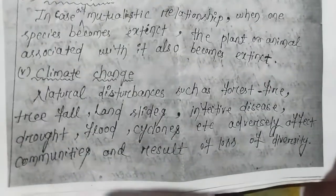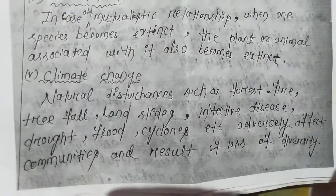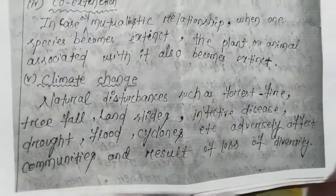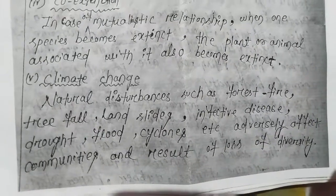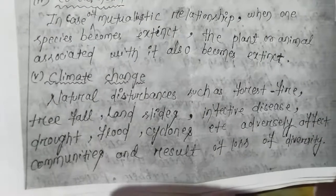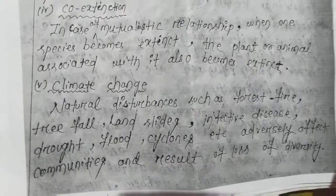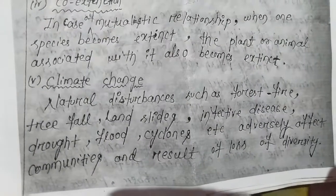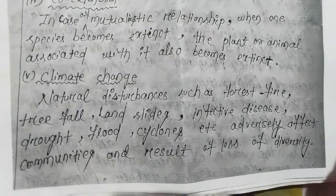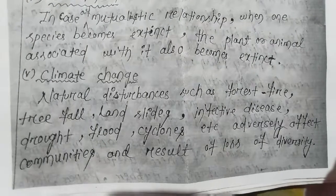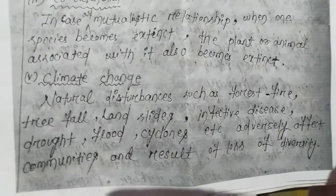Another main problem causing biodiversity loss is climate change. Natural disturbances such as forest fires, tree falls, landslides, infective diseases, drought, floods, and cyclones adversely affect communities and result in loss of biodiversity.